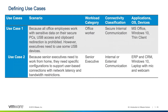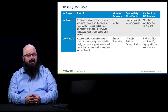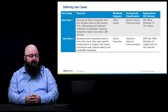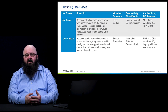We have a couple of examples for defining use cases. In our first use case, all office employees work with sensitive data within the environment. Because of that, USB access and clipboard redirection is not allowed. But certain users — executives — do need USB access. They are classified under an office worker category with secure internal communication and the various applications they need, but because of that special USB access, we would create a separate use case for them that identifies the peripheral needs not part of the normal office worker needs.